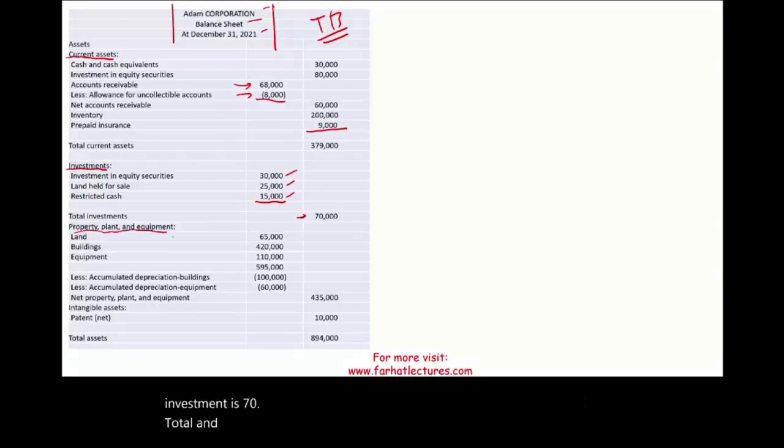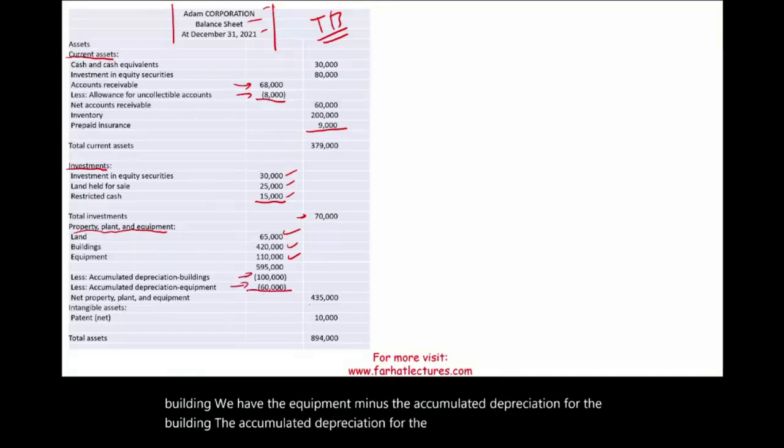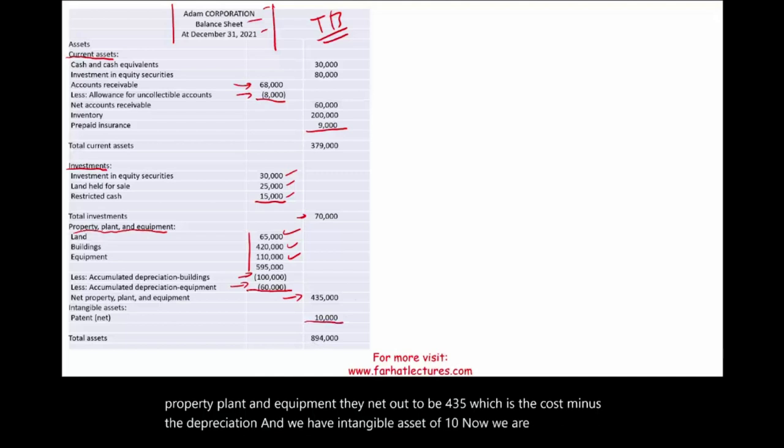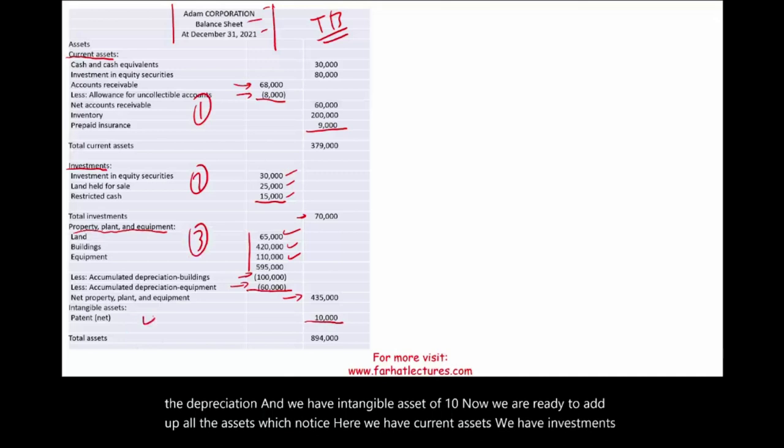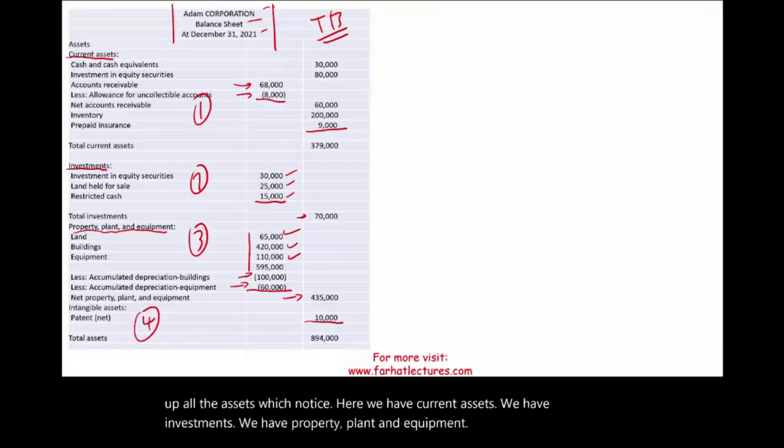Total property, plant, and equipment. We have the land. We have the building. We have the equipment minus the accumulated depreciation for the building, the accumulated depreciation for the equipment. So when we net all property, plant, and equipment, they net out to be $435,000, which is the cost minus the depreciation. And we have intangible asset of $10,000. Now we are ready to add up all the assets, which notice here we have current assets. We have investments. We have property, plant, and equipment. And we have patent. This is a classified balance sheet. And the total asset is $894,000 for Adam Corporation.